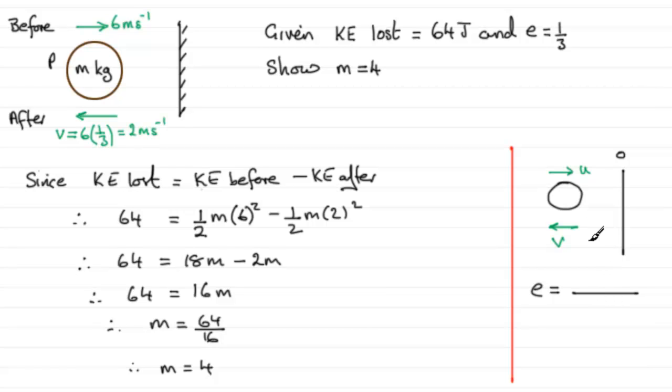well the relative speed after impact will be simply V we know the wall stays stationary so it will be V take away 0 and we compare this to the relative speed before impact and that will be u take away 0 so when you compare these two you've got that E equals V over U so multiply both sides by U and you end up with V equals U times E